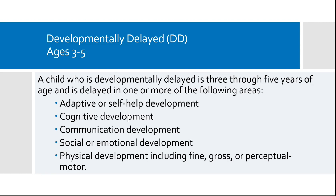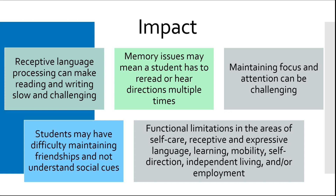A child who is developmentally delayed is three through five years of age and is delayed in one or more of the following areas: cognitive development, communication, social or emotional development, and sometimes physical development, including fine and gross motor skills and perceptual motor skills. Children who miss developmental milestones like speaking, walking, reading, and writing, as well as emotional milestones, may have a developmental disability. This may impact them in ways such as receptive language processing, which can make reading and writing slow and challenging.